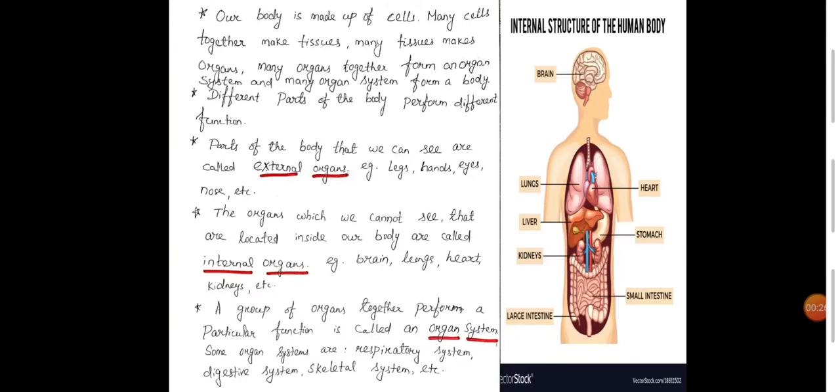Children, before we start about internal organs of human body, let us discuss the external organs what you learned in previous year in Standard 2. What are external organs? The parts of the body that we can see are called external organs.